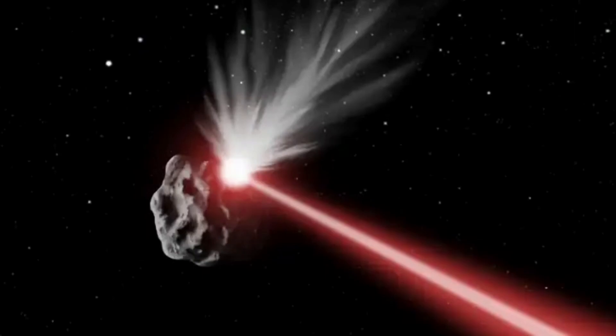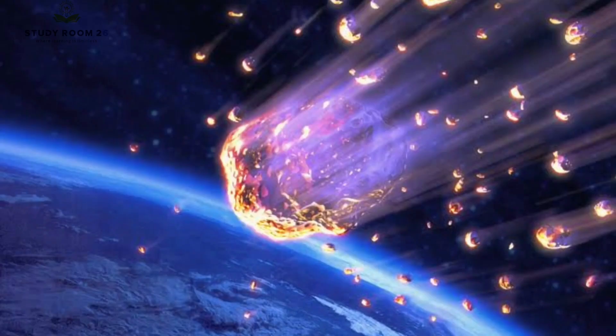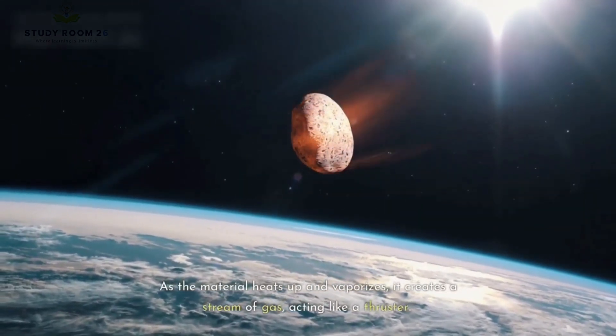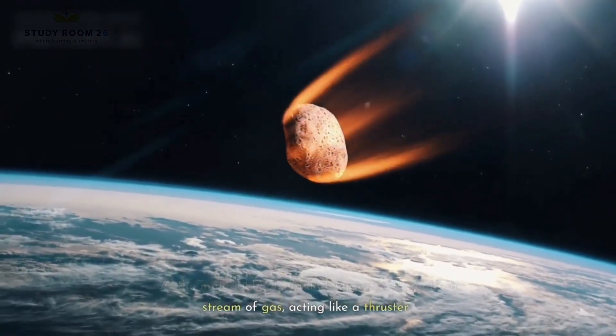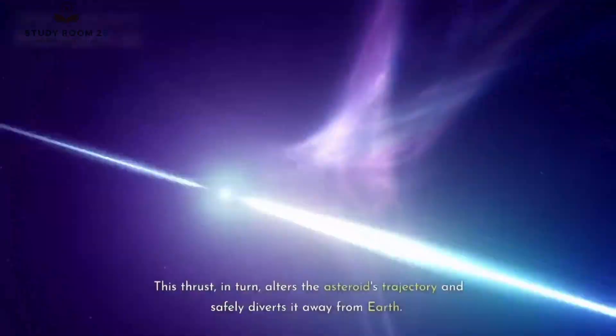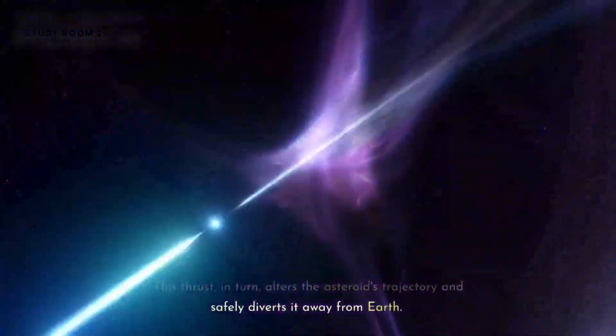Using powerful lasers, scientists can focus intense heat onto the surface of an asteroid. As the material heats up and vaporizes, it creates a stream of gas, acting like a thruster. This thrust, in turn, alters the asteroid's trajectory and safely diverts it away from Earth.